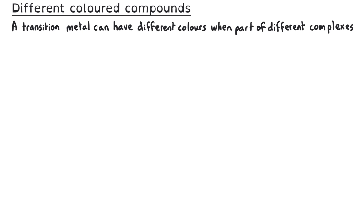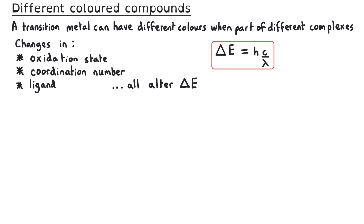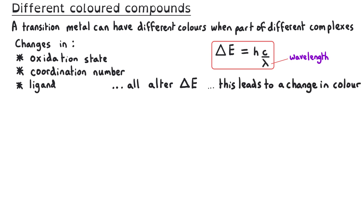Even complexes of the same transition metal can appear different colours, and this is due to a number of factors such as changes in oxidation state, coordination number, or changes to the ligand. All three of these will alter the energy difference, and since delta E equals hc over lambda, this will affect the wavelength of light absorbed and lead to a change in the colour observed.